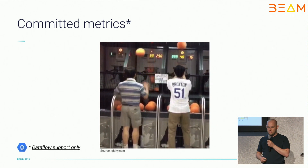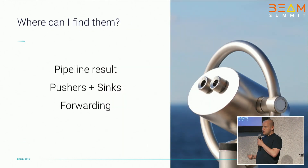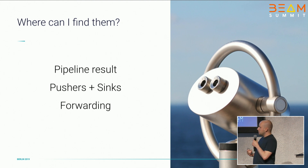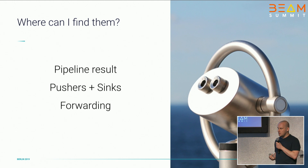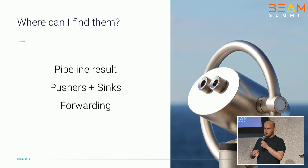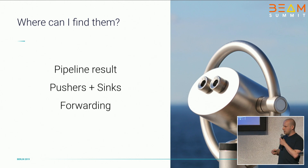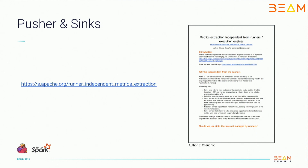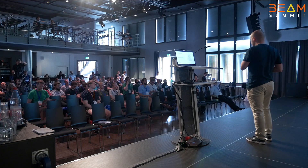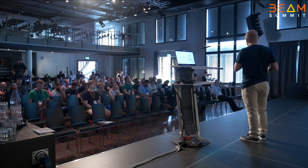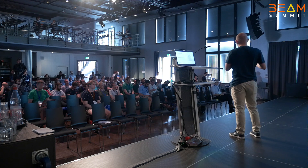Please remember that committed metrics are currently supported only in Dataflow Runner. Collecting metrics from pipeline results is not the only way to get metrics in BIM. You can use special metrics pushers and sinks to get those metrics in external systems, or use metric forwarding mechanisms built around metric containers. A metrics pusher periodically gets metrics from metric containers and pushes them to metric sinks, which forward to external systems such as Graphite. There are currently two metric sinks — HTTP sink and Graphite sink — but you could easily define your own with just one class, supplying it to your classpath and passing an appropriate pipeline option.